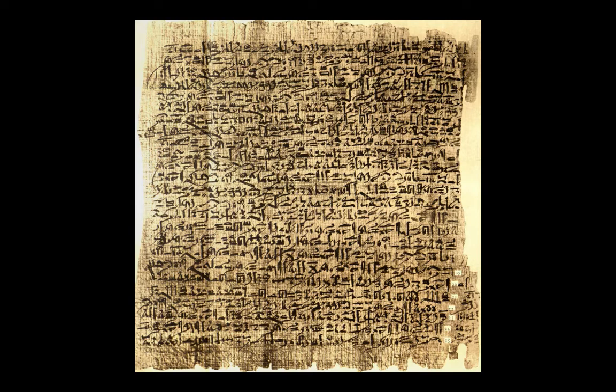With hieroglyphs, largely for ornamental reasons, on walls of tombs and monuments. And with the hieratic system, which you see in this papyrus. The hieratic system can be described as a simplified form of hieroglyphs and was used for official documents, letters, or other types of literature.